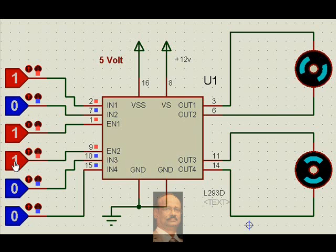Similarly, if I make this enable high and I make this 1, 0, both motors rotate in forward direction.